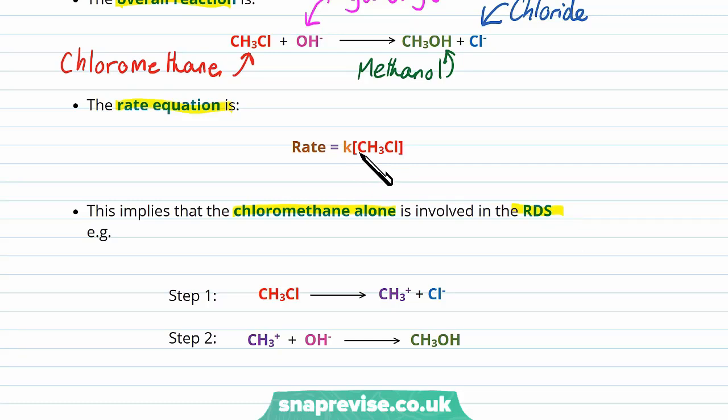Here's an example of what the mechanism could look like. In step one, we could have the chloromethane spontaneously breaking up into a CH3+ ion and a Cl- ion. And because it's the chloromethane that's in the rate determining step, we know that this would be the slow step in the reaction. In the next step, you could have the CH3+ ion combining with the hydroxyl ion to make the methanol. And that would be fast because it doesn't affect the rate and is therefore not in the rate equation.